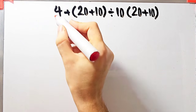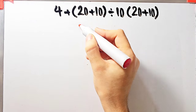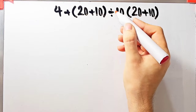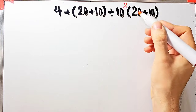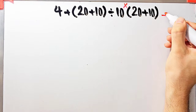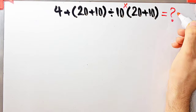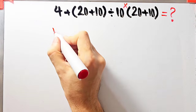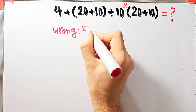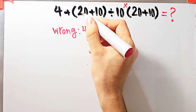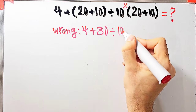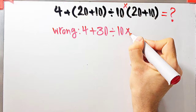In the second question we have 4 plus open parenthesis 20 plus 10 close parenthesis, then divided by 10, then times open parenthesis 20 plus 10 close parenthesis. What is the answer? Some people solve this incorrectly by saying 4 plus 20 plus 10 equals 30, divided by 10, then times 20 plus 10 equals 30.